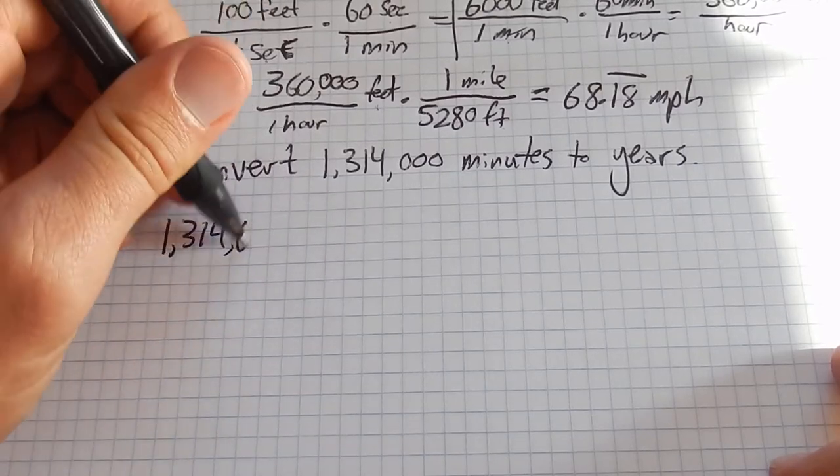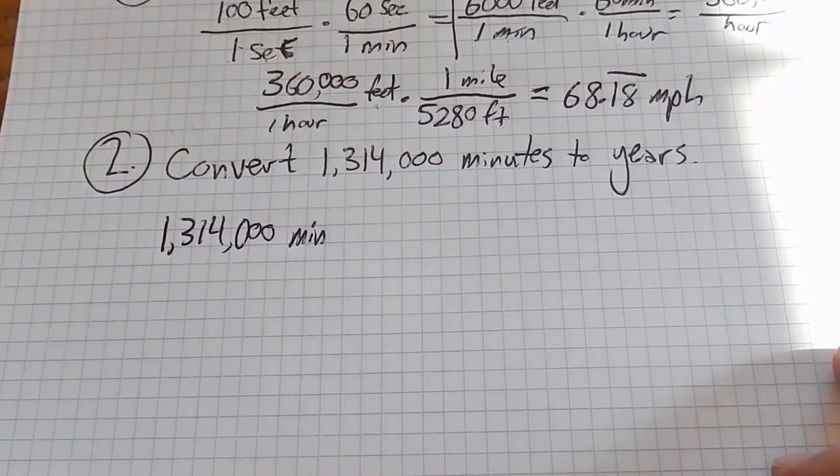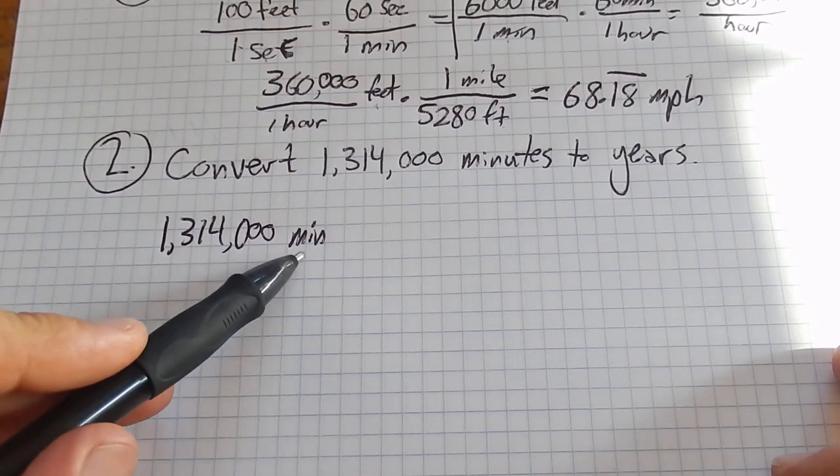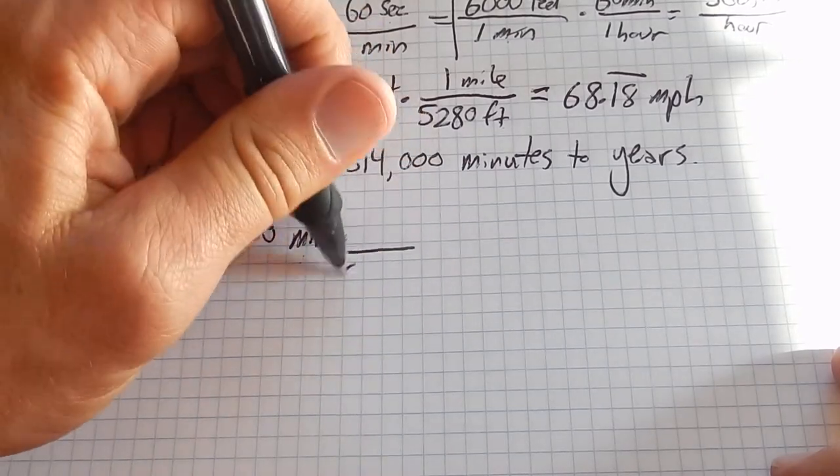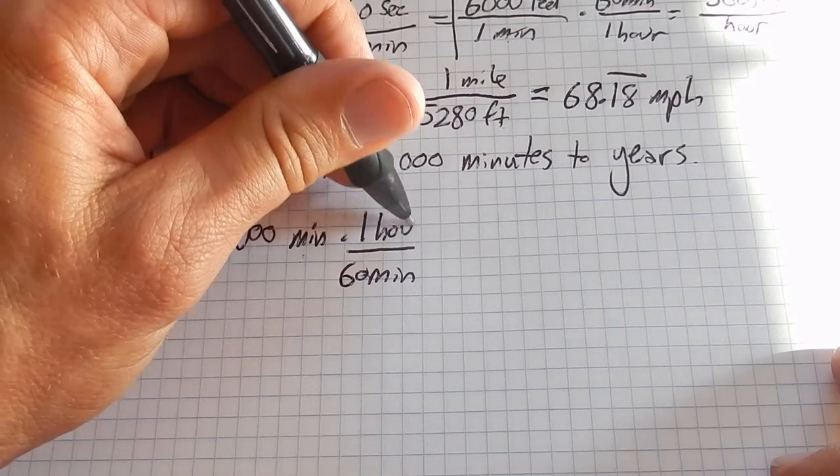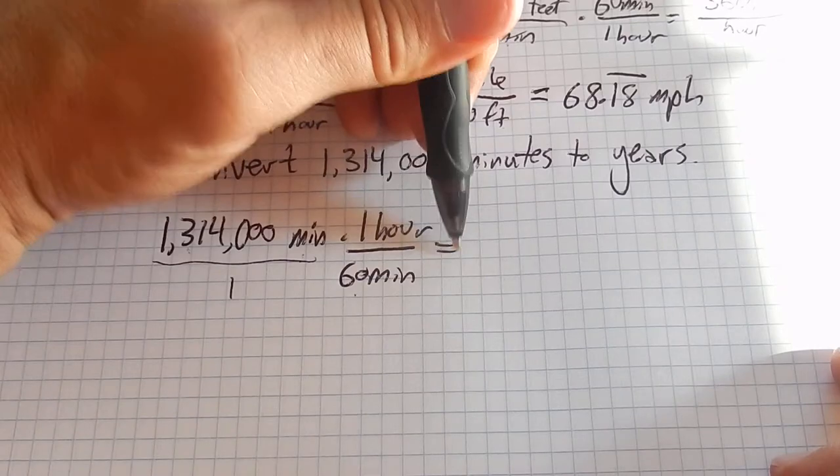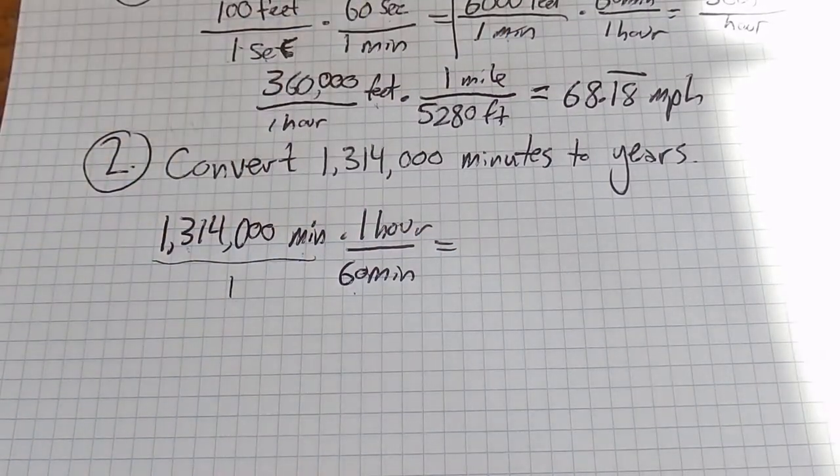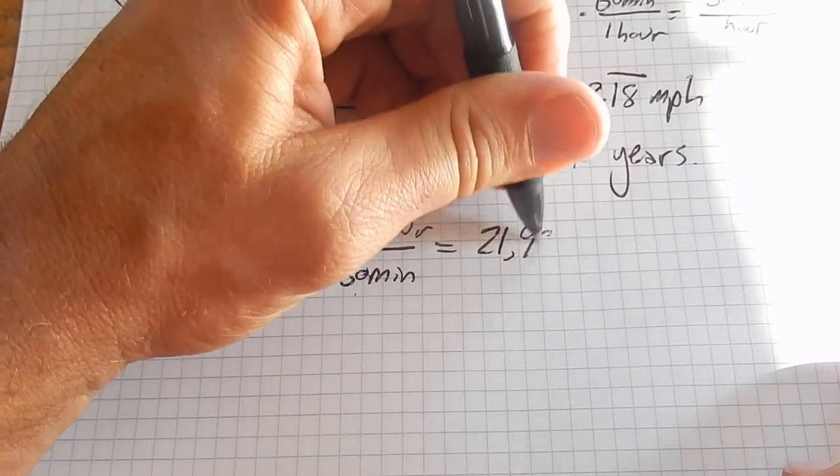So I have 1,314,000 minutes and I want to change it into years. I know that every 60 minutes is 1 hour. So if I were to divide this by 60, that would be how many hours I have. It looks like 21,900.